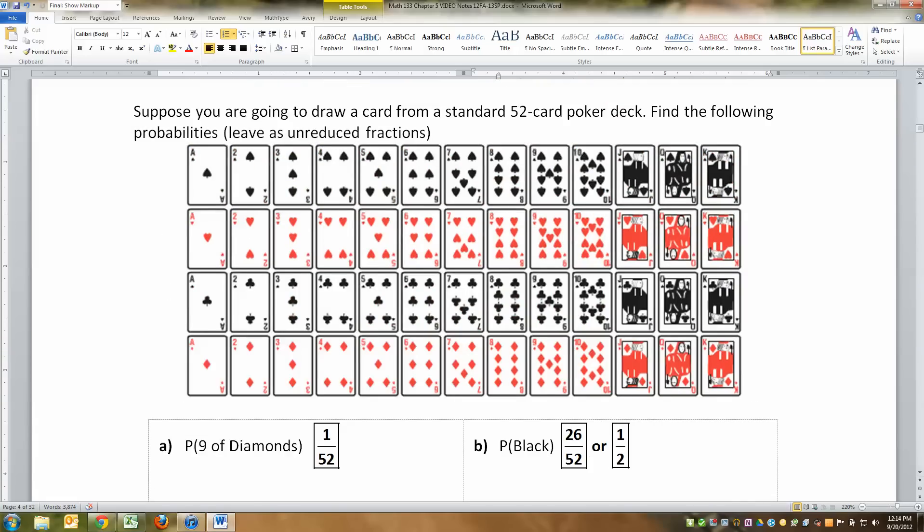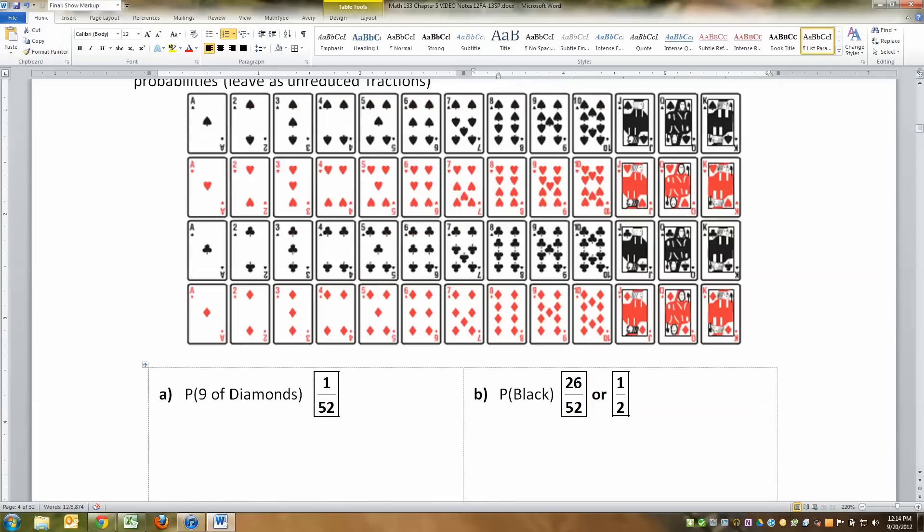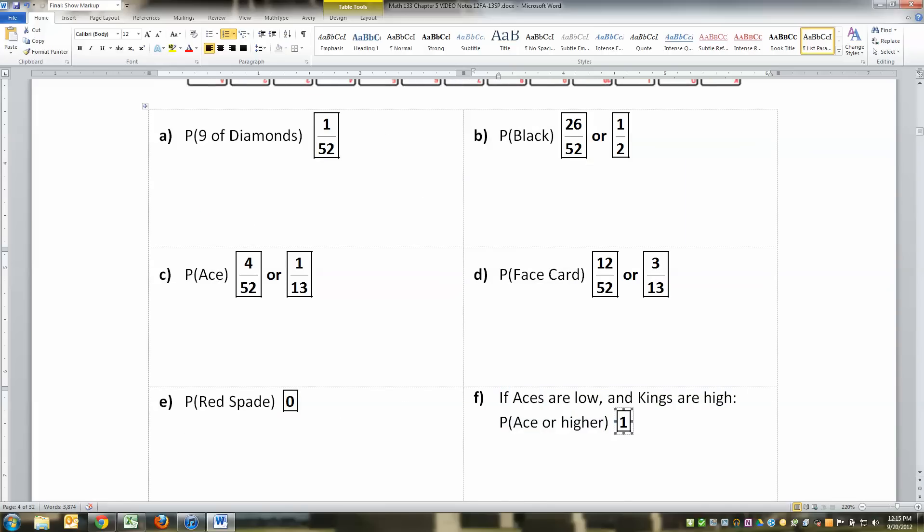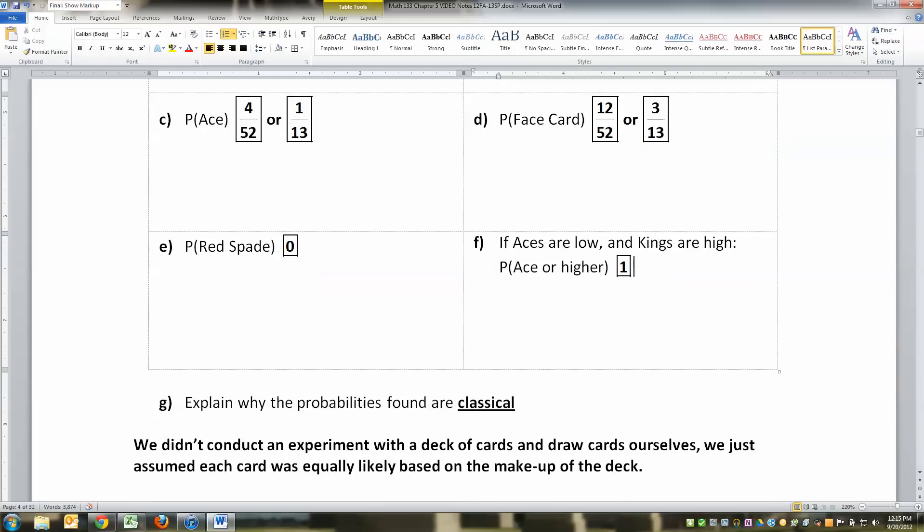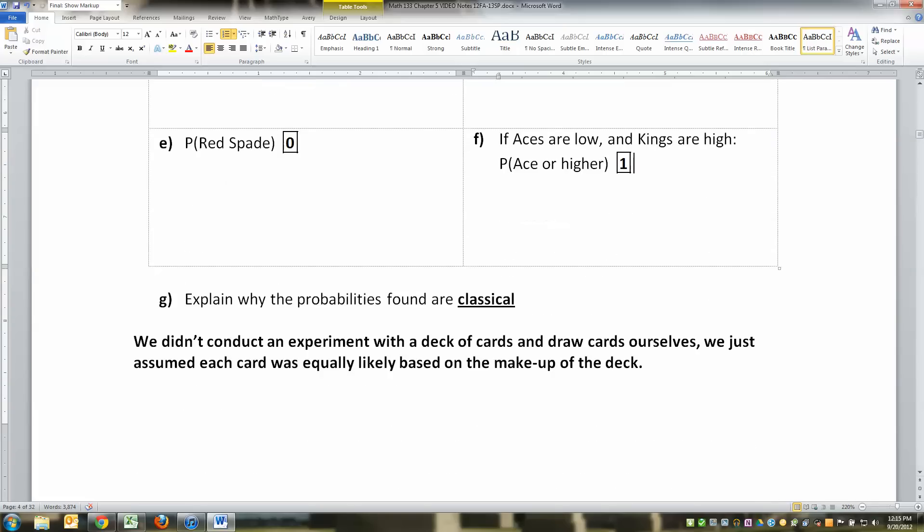What about a red spade? Well, there is no red spade. Spades are black. So the probability of a red spade is zero. That'll come up a little bit later. So if something's impossible, it's zero. If aces are low and kings are high, like I have here, what's the probability of drawing an ace or higher? And the answer is one, 100%. You have to draw something, and everything's higher than an ace. So ace or higher is 100%. Now, why are these probabilities classical? Well, we didn't conduct an experiment and draw cards out of a deck ourselves. We just assumed every card was equally likely based on the makeup of the deck, and we figured out the probabilities based on that. That's classical. When you do things hypothetically, that's classical probability.